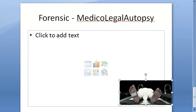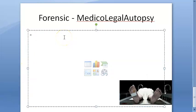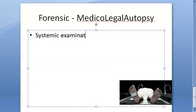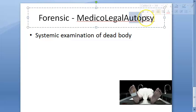In this video, let us look at the objectives and formalities of a medico-legal autopsy. A medico-legal autopsy is a systemic examination of a dead body done in a suspected case of foul play to determine the cause of death and manner of death. The word 'auto' means self and 'opus' means view.